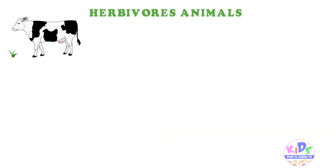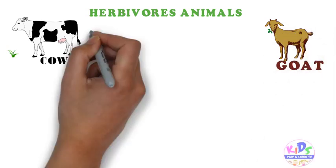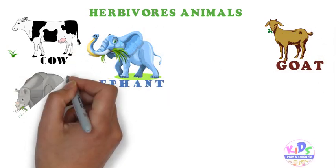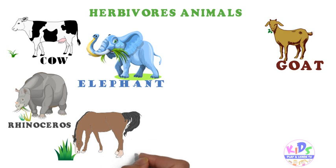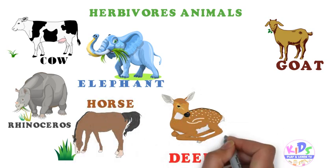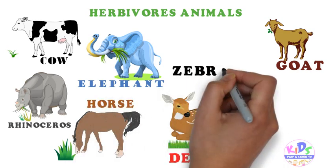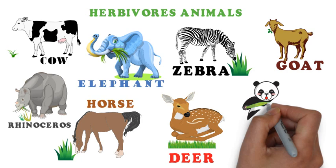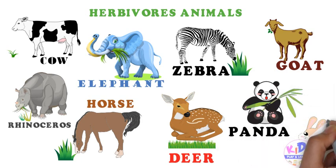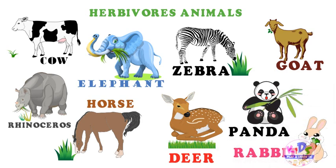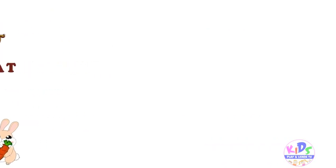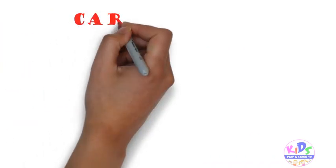The various examples of herbivore animals are cow, goat, elephant, rhinoceros, horse, deer, zebra, panda, rabbit, and many more.